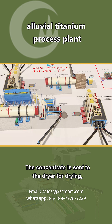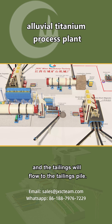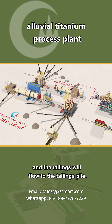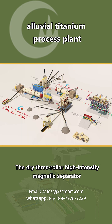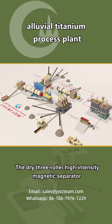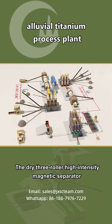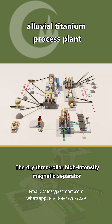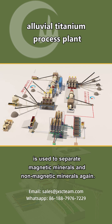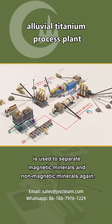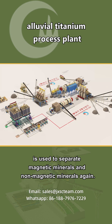The concentrate is sent to the dryer for drying, and the tailings will flow to the tailings pile. The dry three-roller high-intensity magnetic separator is used to separate magnetic minerals and non-magnetic minerals again.